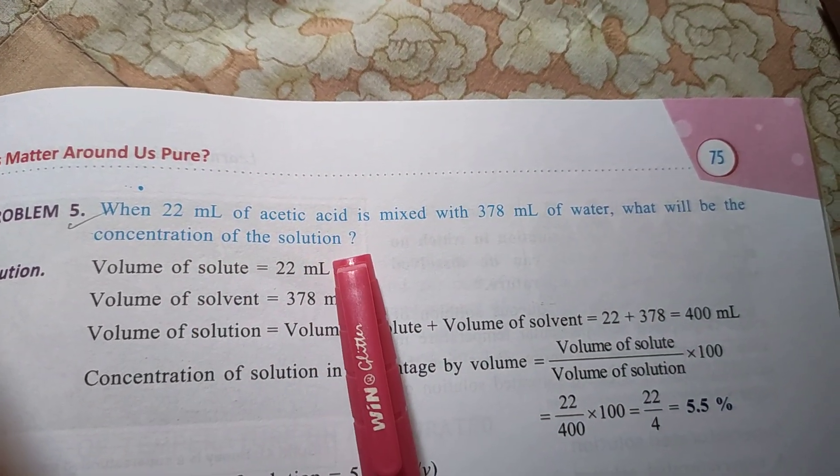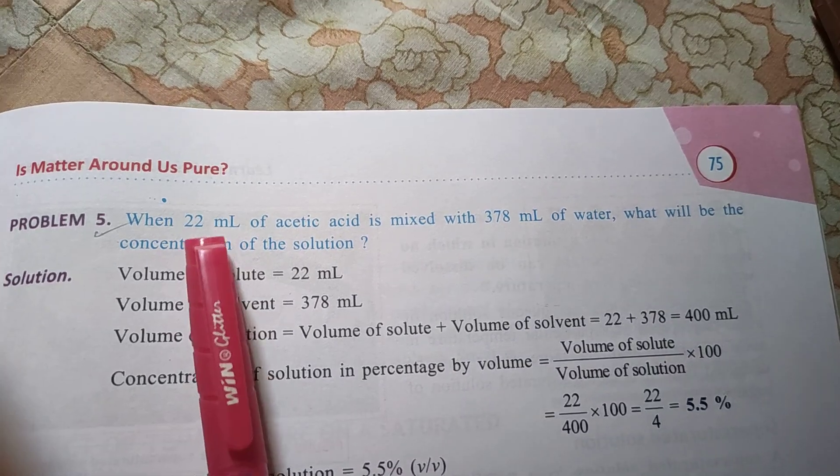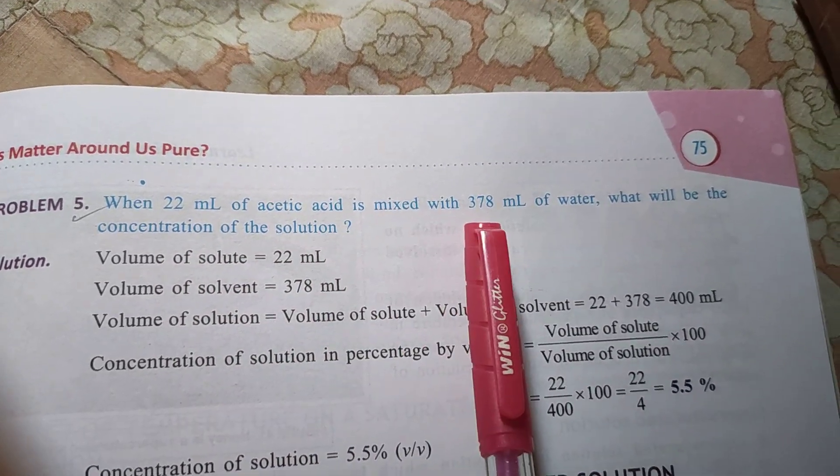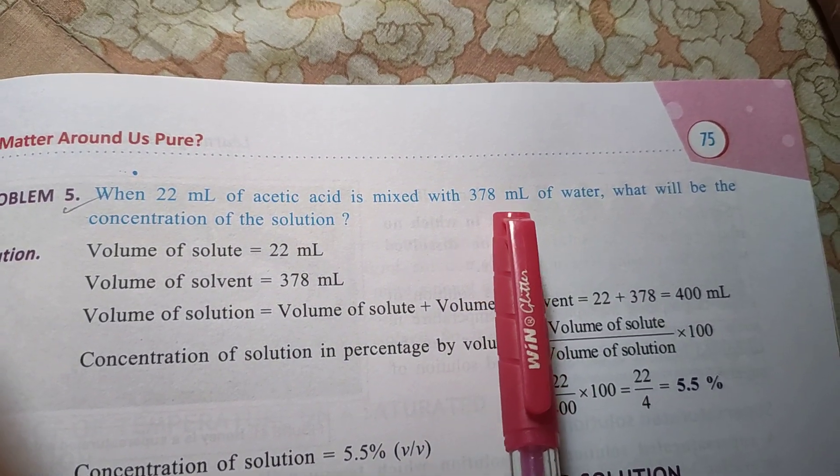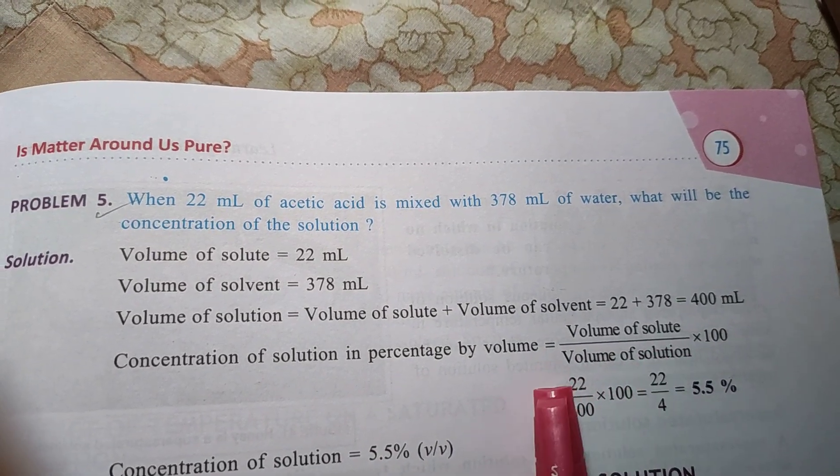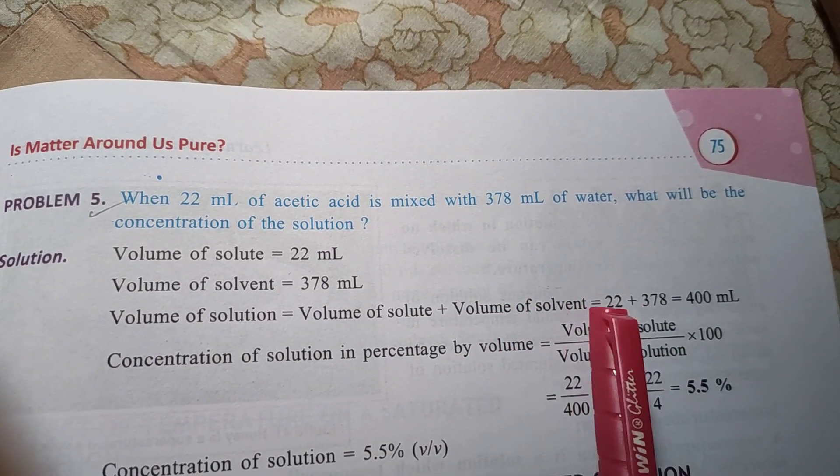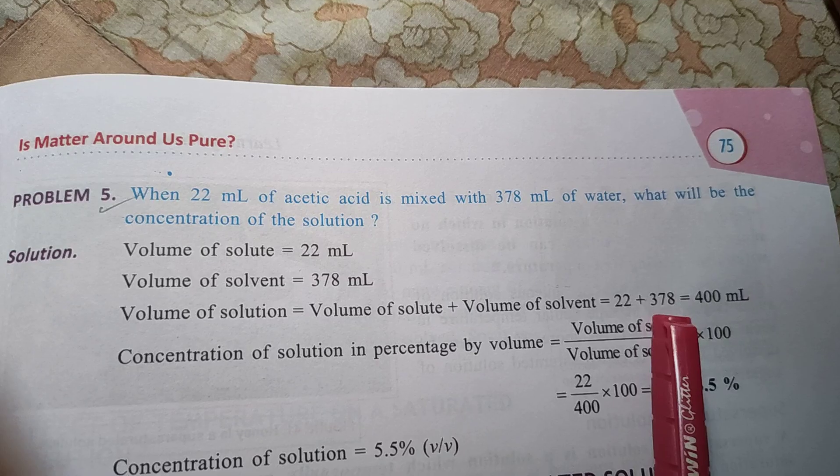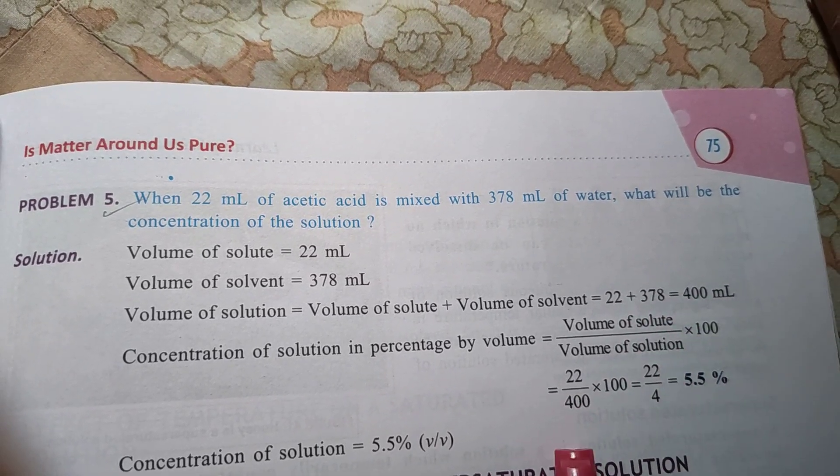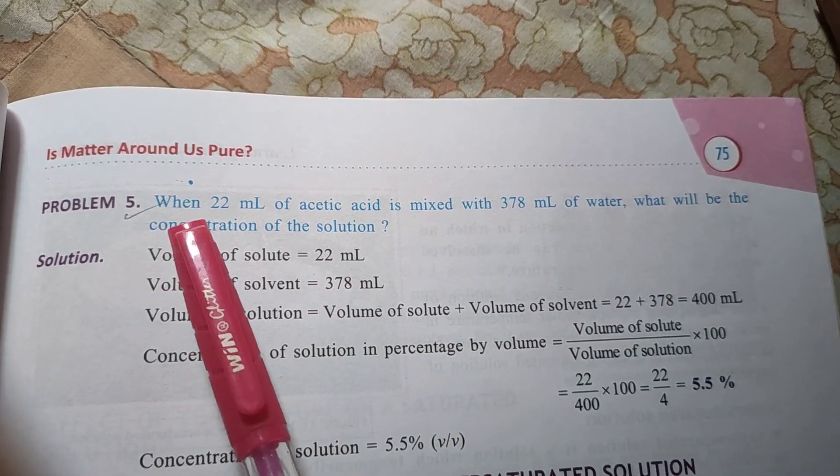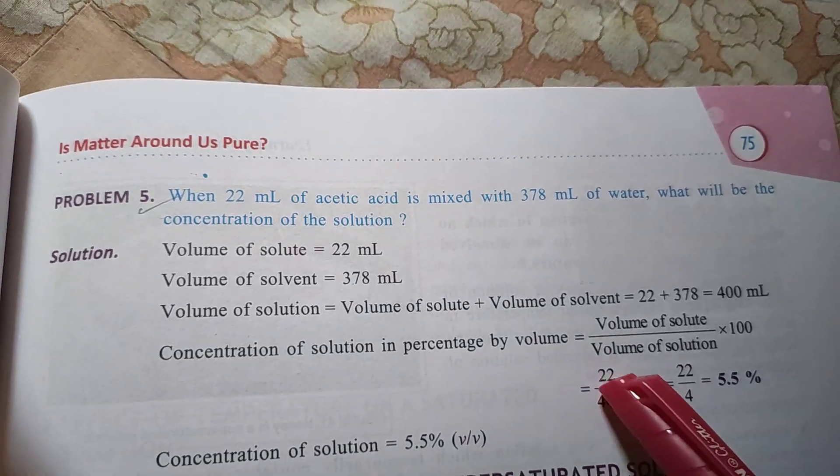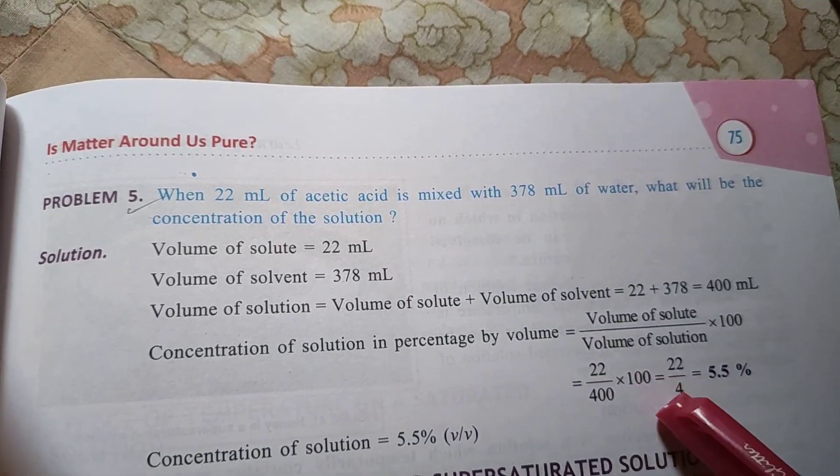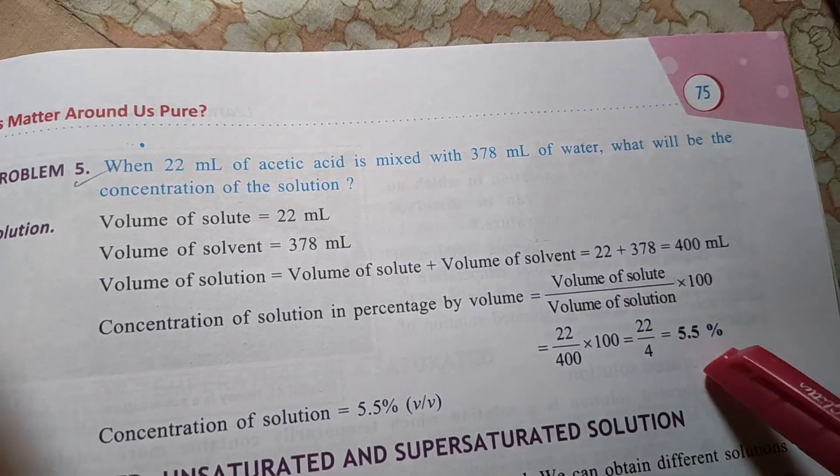So the solute is 22 ml of acetic acid and solvent is 378. Then our volume of solution is after adding both, because solute plus solvent, then the solution is 400 ml. The amount of the solute is 22, so 22 divided by 400 times 100. The amount of mass percentage is 5.5 percent.